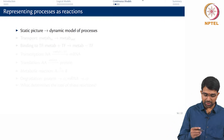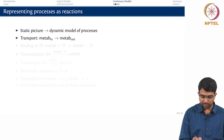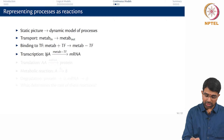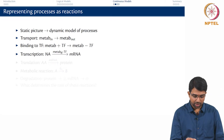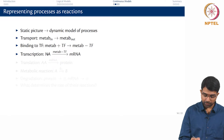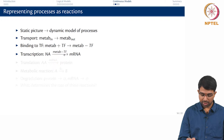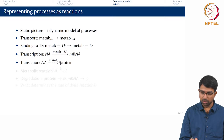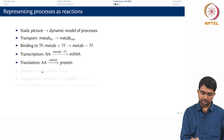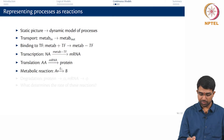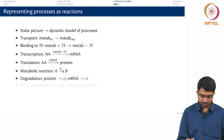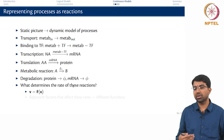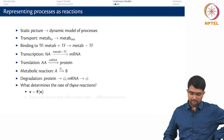You need to take a static picture and transform it into a dynamic model of processes. A transport will look like a particular kind of reaction. Binding of a metabolite to a transcription factor; transcription involves the conversion of a nucleic acid to an mRNA in the presence of a transcription factor. Then translation: amino acids to protein when mRNA is present. Then a metabolic reaction — in the presence of an enzyme, A will go to B. Then degradation: protein degrades, mRNA degrades — and you can write a rate function which captures the rate of all these reactions.